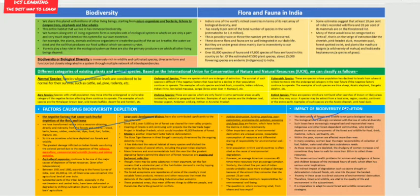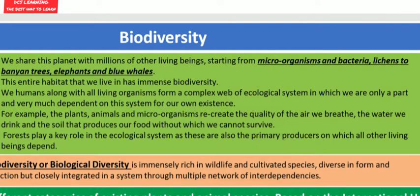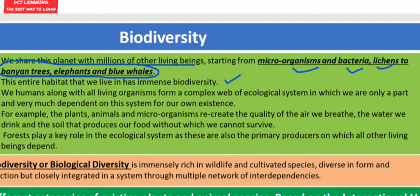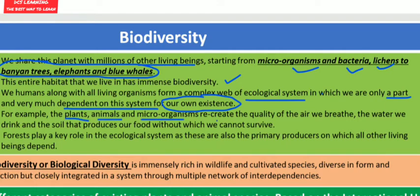Biodiversity refers to the variety of living beings sharing our planet — from microorganisms, bacteria and lichens to the largest banyan trees, elephants and blue whales. This entire habitat has immense biodiversity. We humans, along with all living organisms, form a complex web of ecological systems, and we are very much dependent on this system for our own existence.